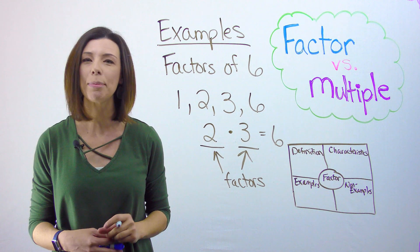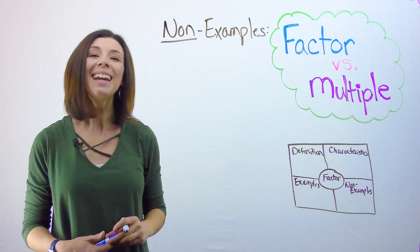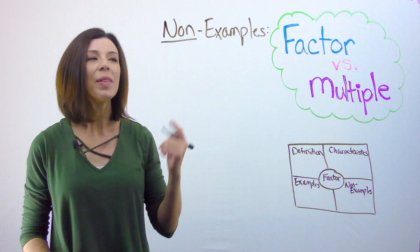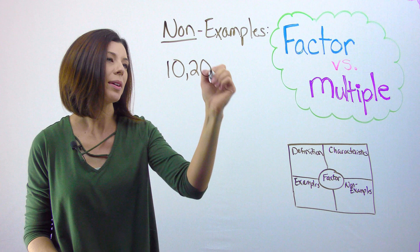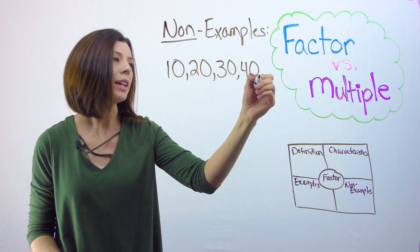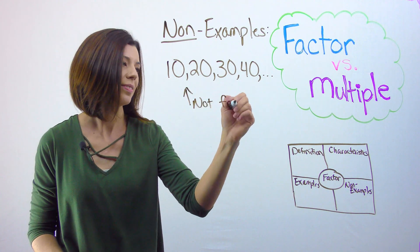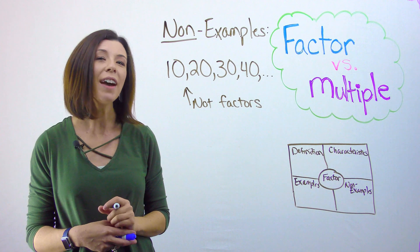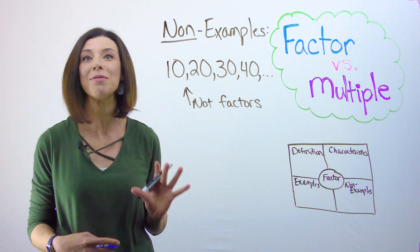Now let's look at a non-example and see if you can come up with a definition on your own. Here is a non-example. Let's say, for instance, I'm skip counting by tens. So I have 10, 20, 30, 40, etc. These are not factors. In fact, they're actually called something else. I won't spoil the video for you so you can figure it out.